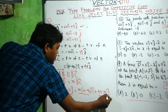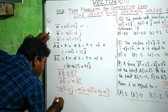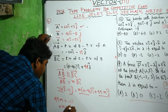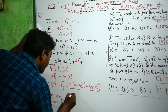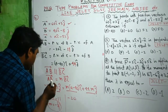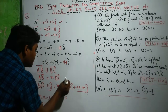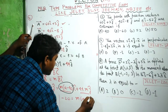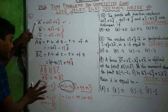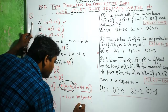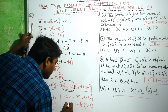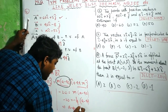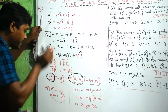Since both sides are equal, we equate components. From the j-component: 44m equals minus 11, giving m equals minus 1 by 4. From the i-component: minus 20 equals m times (a minus 40). Substituting m equals minus 1 by 4, we get (a minus 40) equals 80.